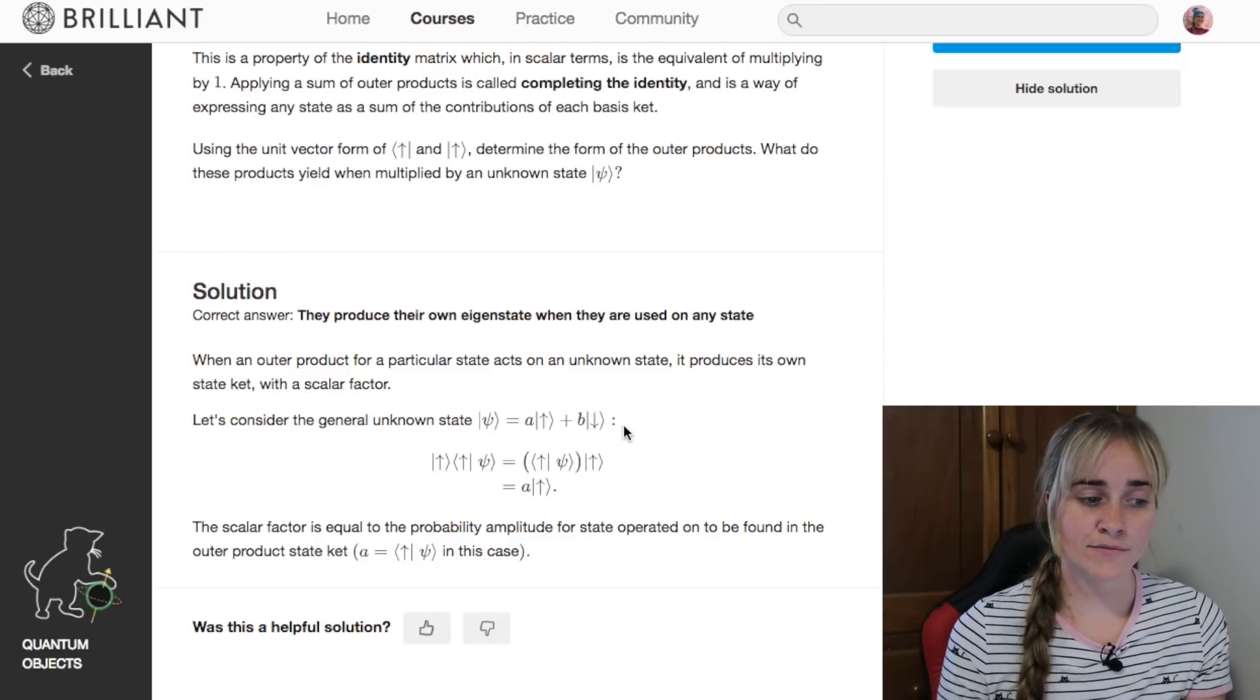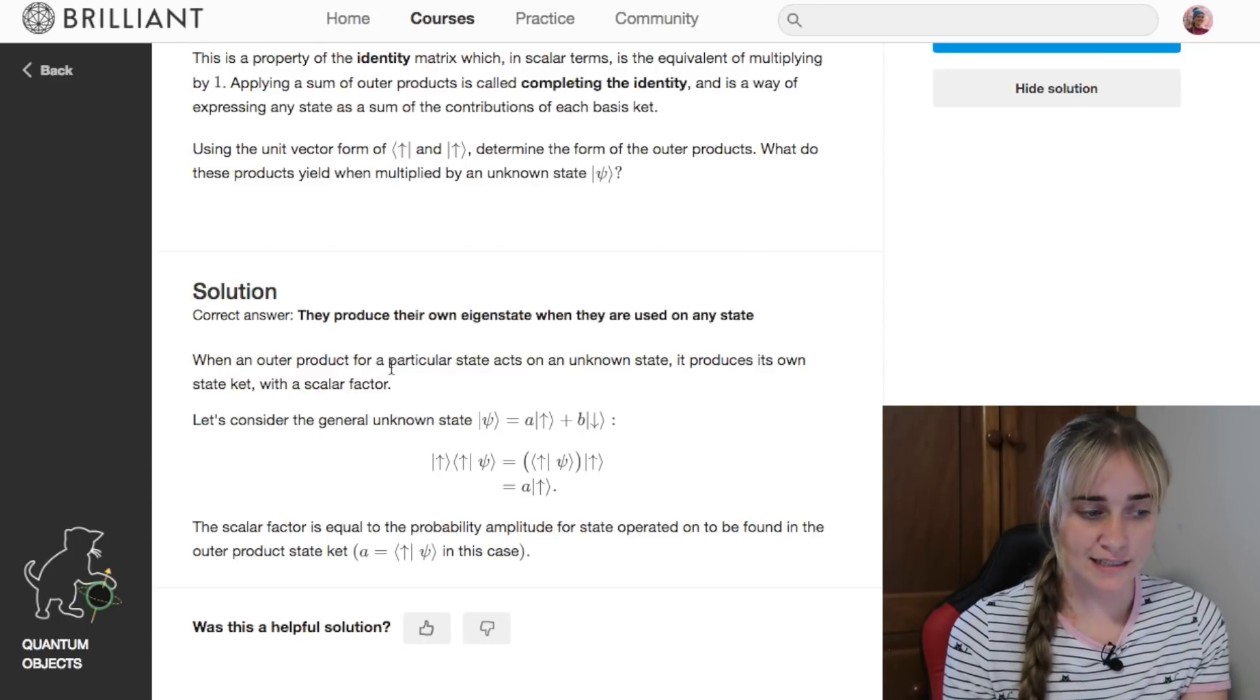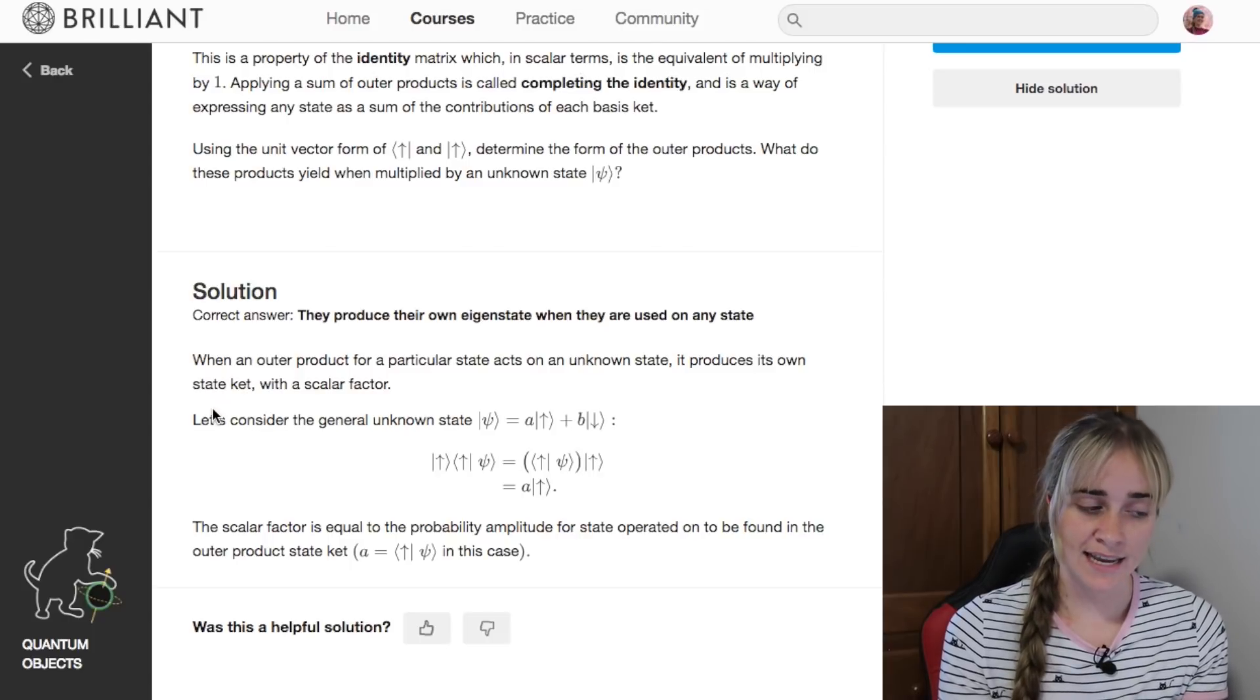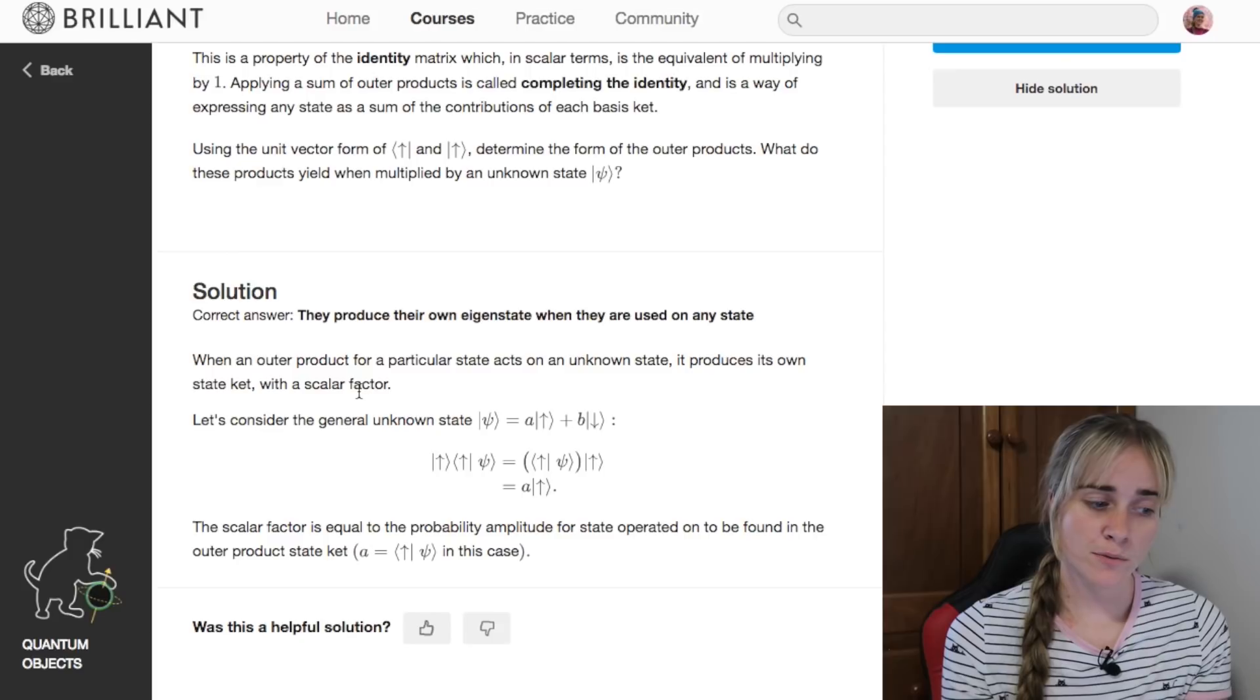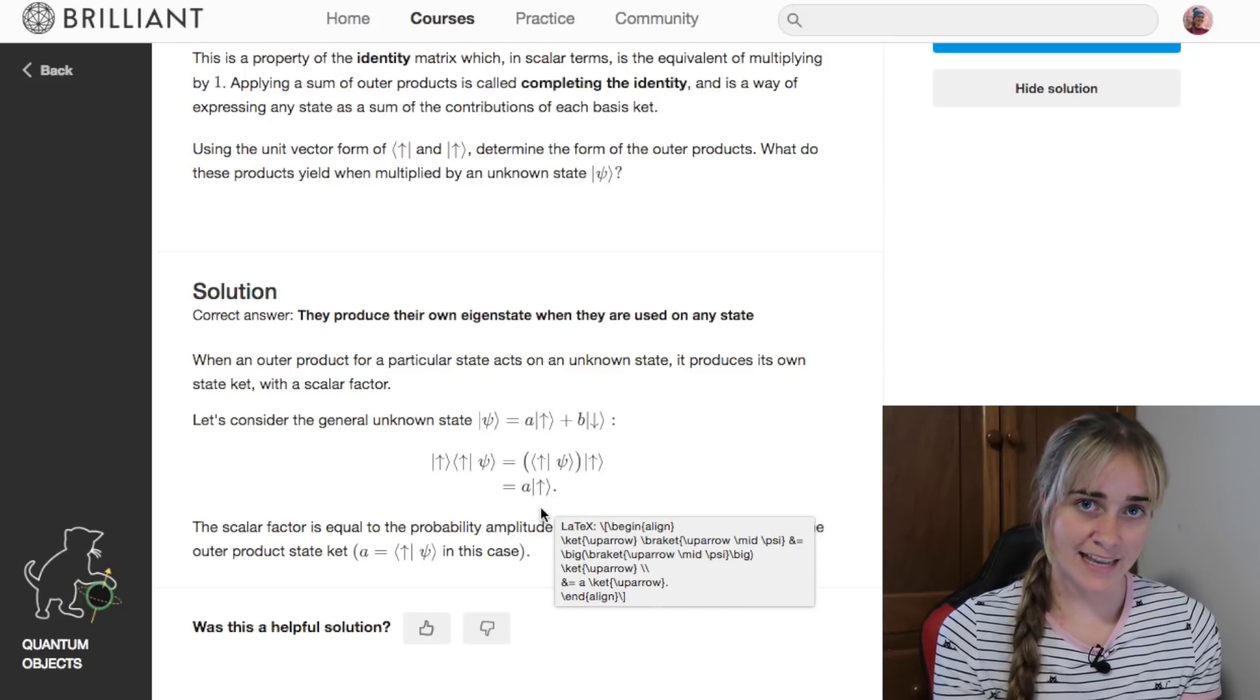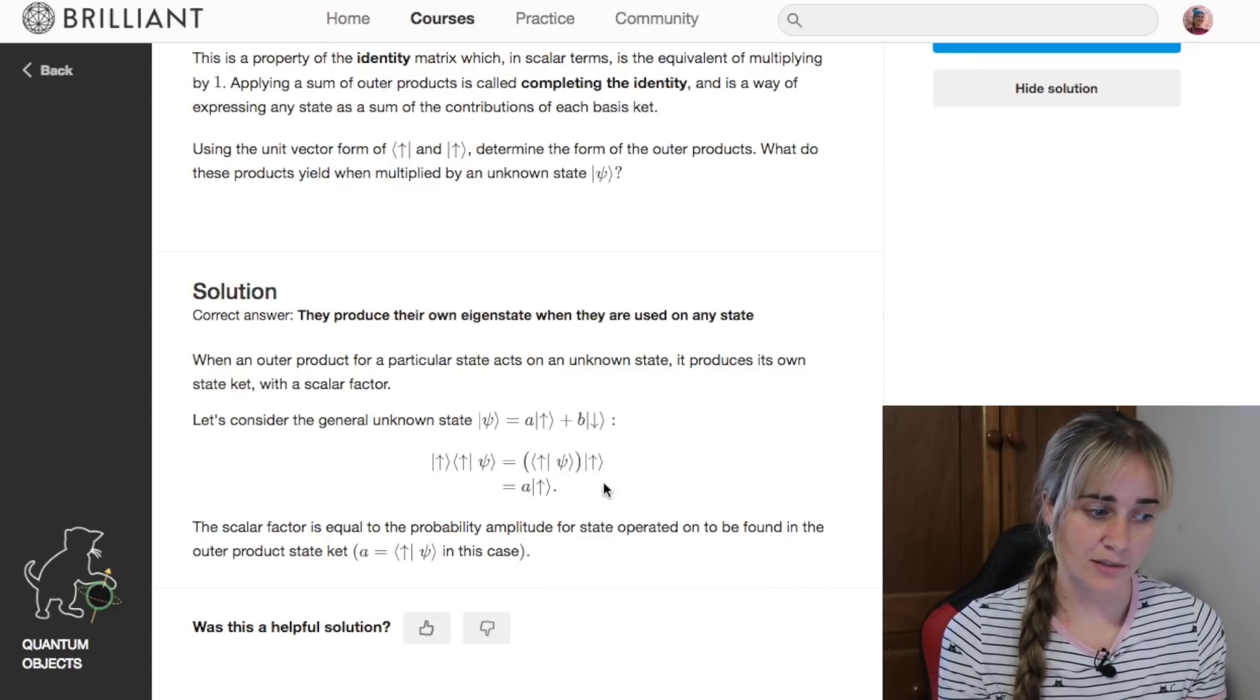It basically returns a scalar value, it returns some multiple of itself. When an outer product for a particular state, say spin up, acts on an unknown state psi, it produces its own state ket with a scalar factor. So if you were to do the outer product of spin up spin up on psi, you would get out the spin up state ket with some scalar factor A.